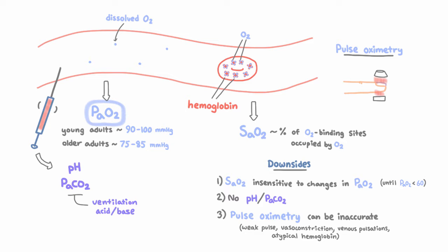If we know both the PaO2 and the SAO2, then we can calculate the total arterial oxygen content, or CaO2, expressed in milliliters per deciliter. That means the milliliters of pure oxygen gas that are dissolved in a deciliter of blood. It's equal to the sum of the amount of oxygen bound to hemoglobin plus the amount of dissolved oxygen in the blood.